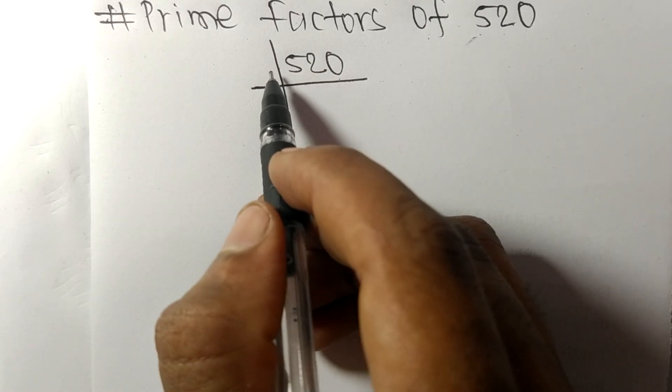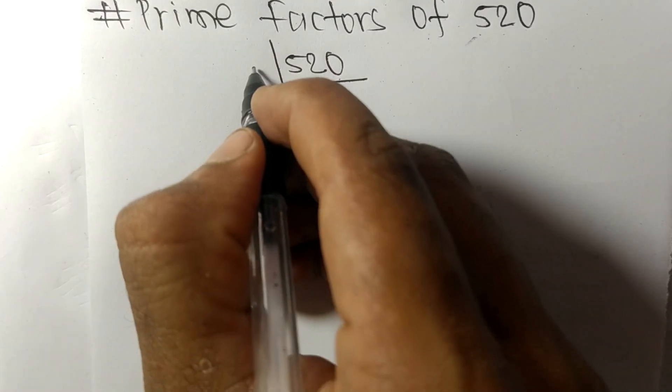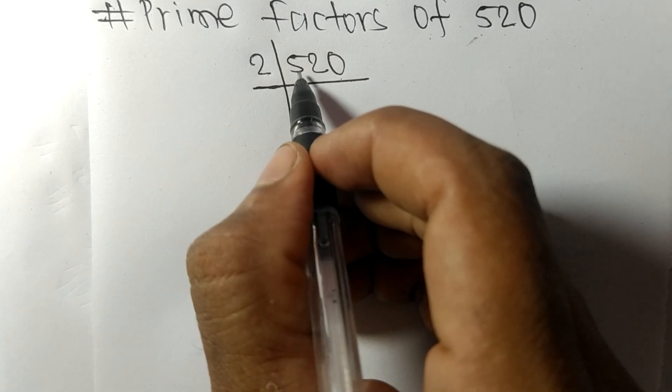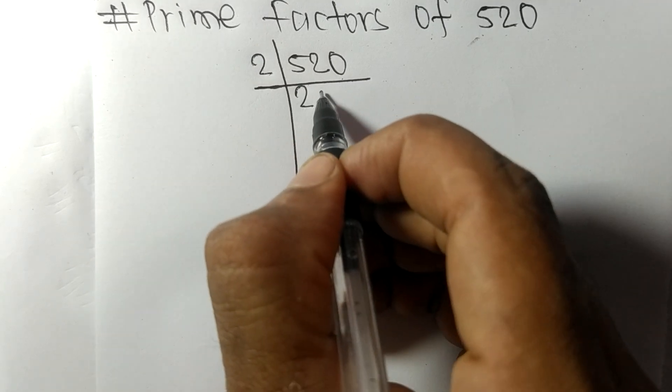So these whole numbers are divisible by 2. 2 times 2 means 4, remainder 1. 1 to 12. 2 times 6 means 12 and 2 times 0 means 0.